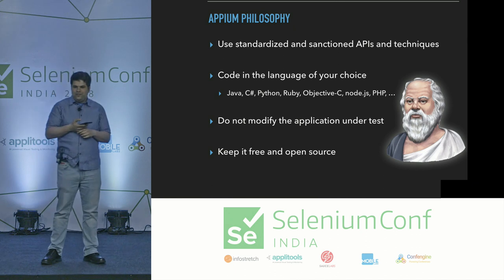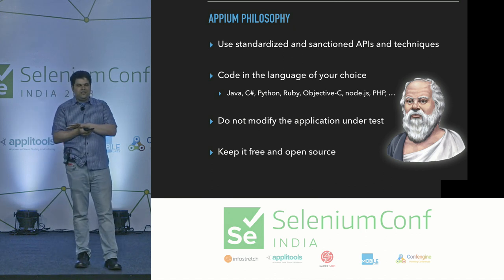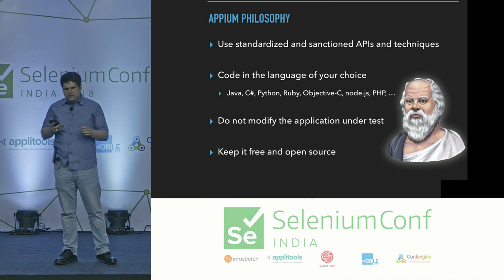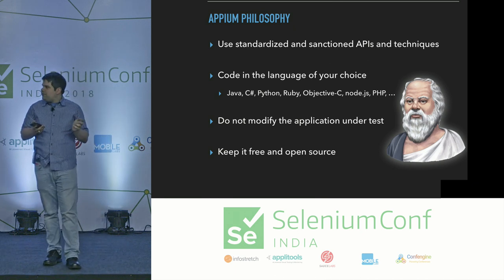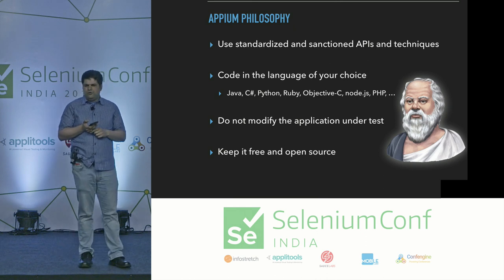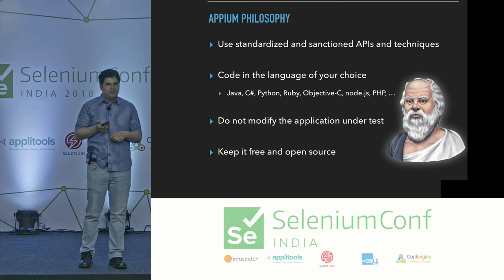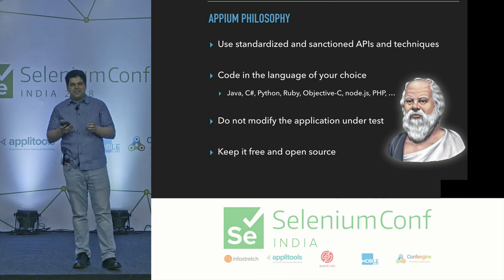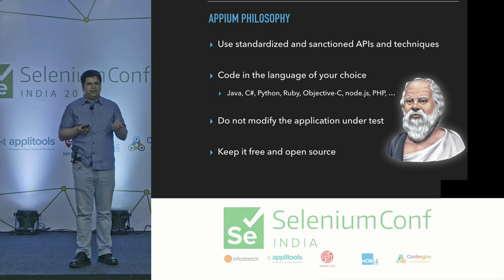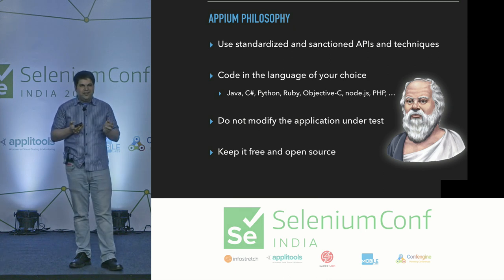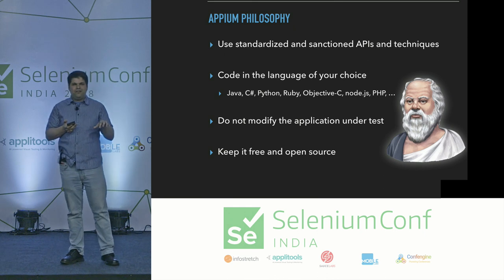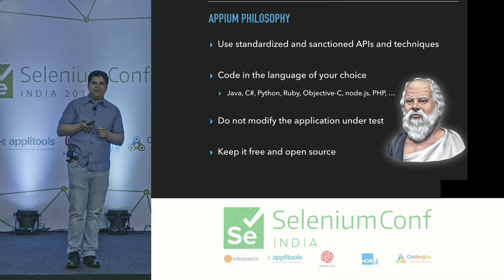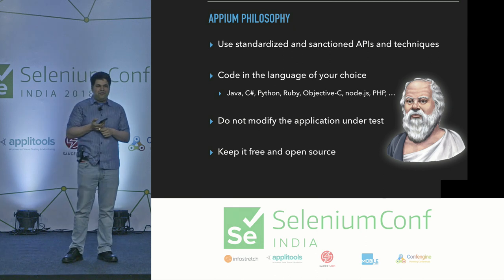Appium has a pretty simple philosophy. Number one: use standardized tools and techniques from the get-go — no private API calling, no buffer overflowing to get privileges. We also wanted you to code in the language of choice. We didn't want to modify the application under test, since that gives you different behavior from what customers see and opens you up to problems. And lastly, we wanted to keep it free and open source — not just for the rich and wealthy, but for the people.